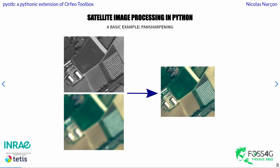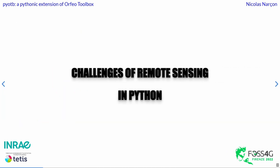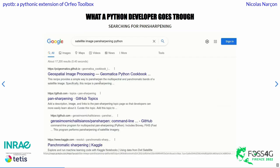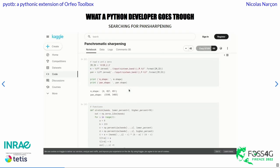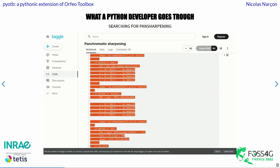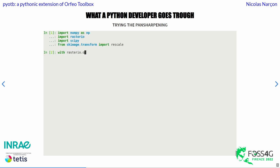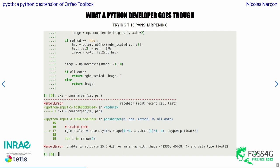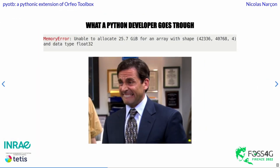First, let's start with a simple use case of remote sensing. Let's consider that we want to do some pan-sharpening. If you are a usual Python developer, the first thing you do is search on the internet for some libraries or pieces of code that do what you want. Once you find something interesting, you copy-paste it, and here is a sample code using rasterio for reading satellite images. We pass it the function found on Google, and we are faced with a memory error.